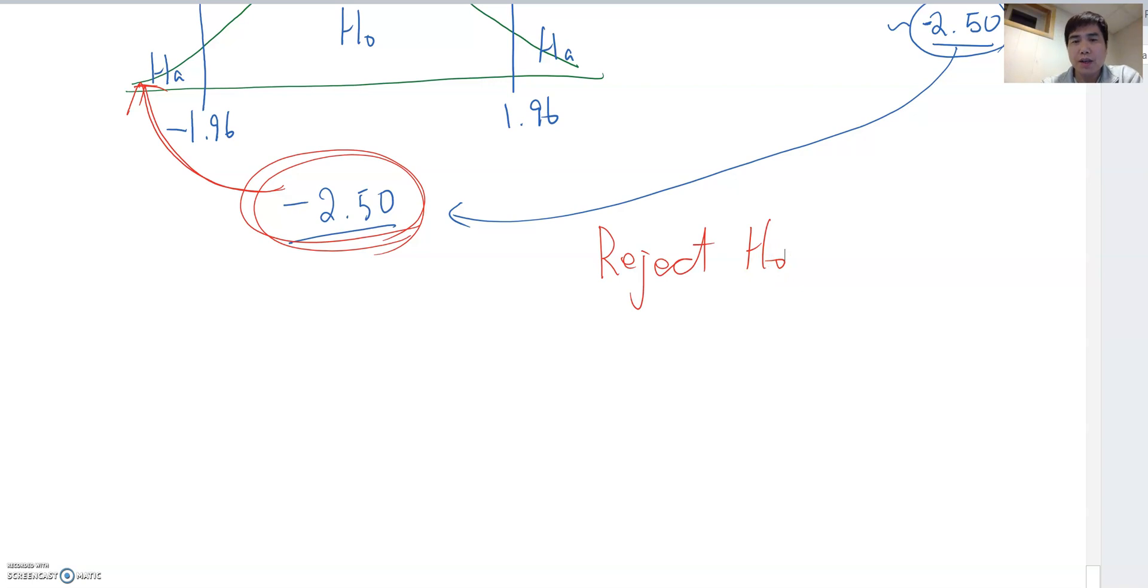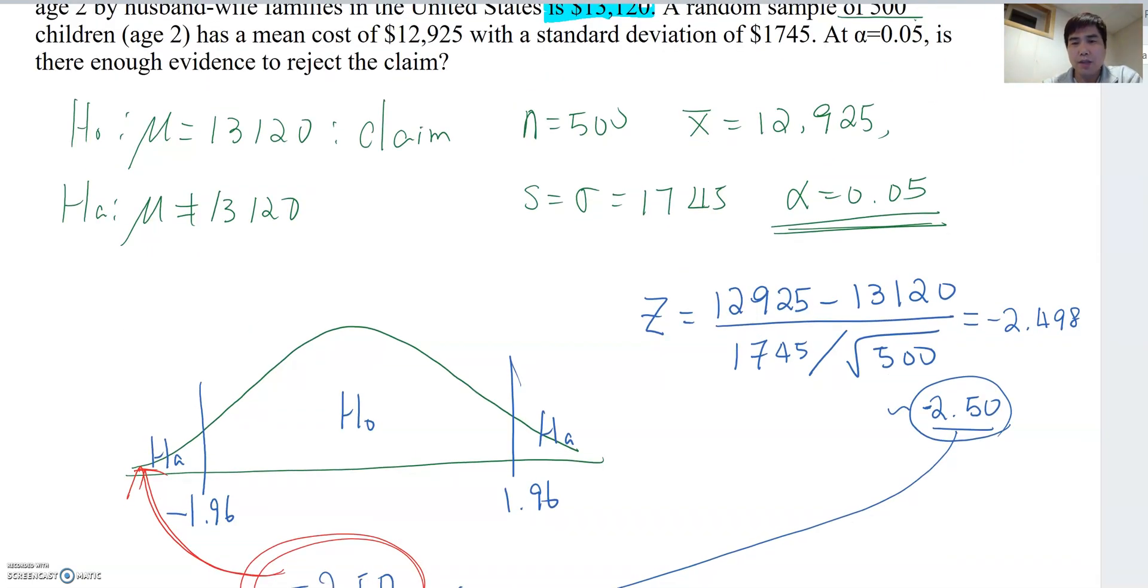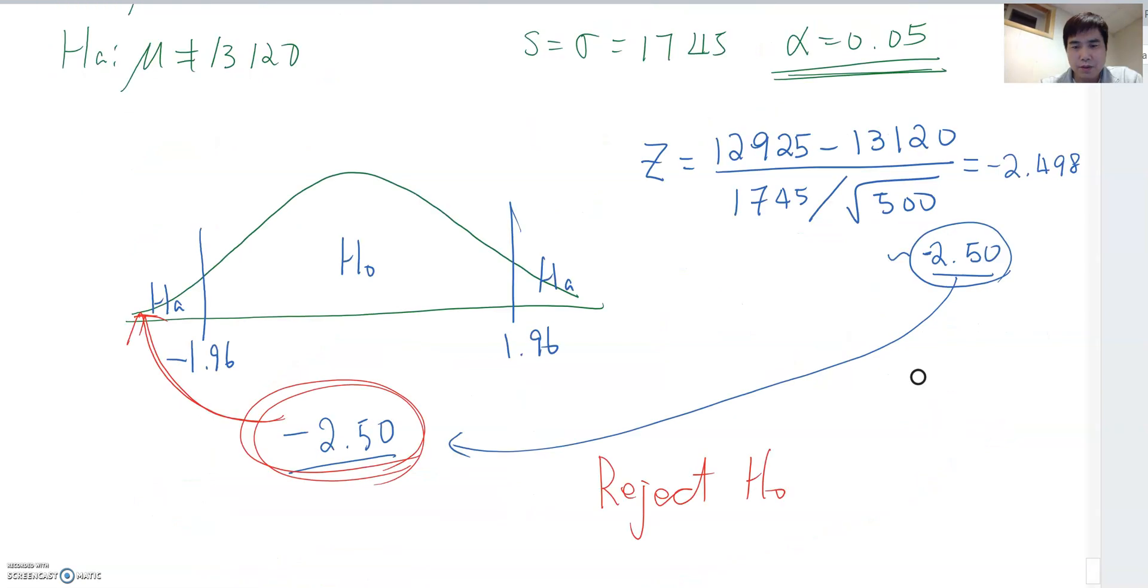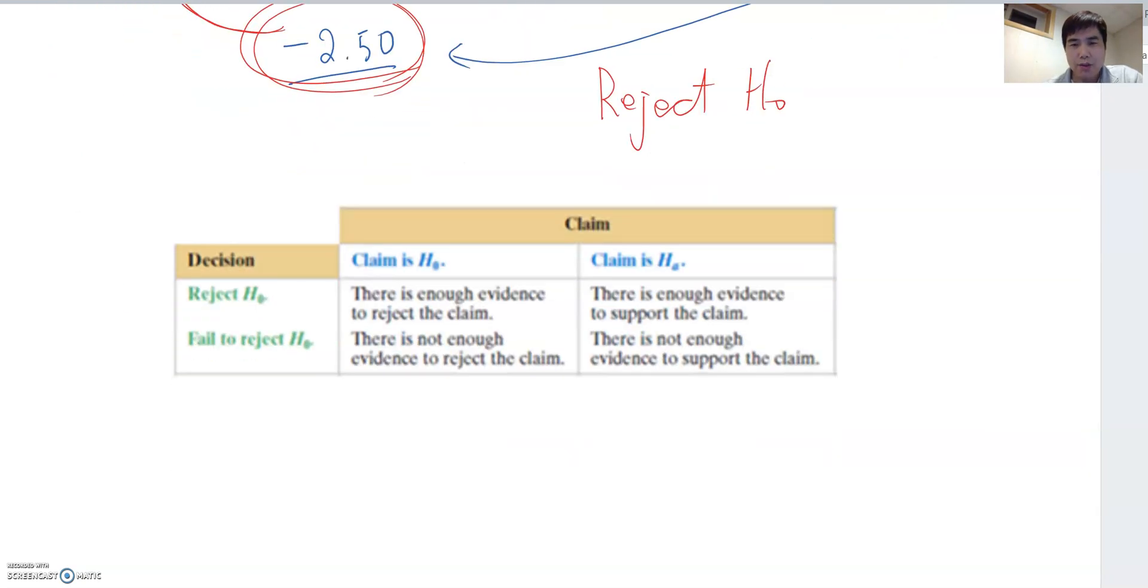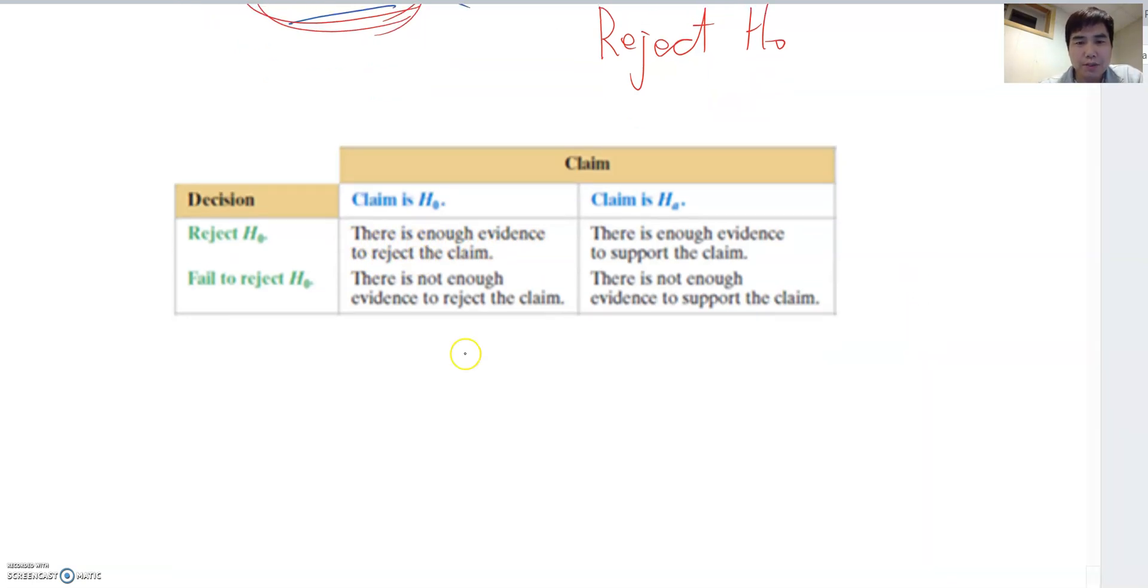Now where was the claim? Claim was on H0. Therefore, claim was H0 and then we reject H0. Therefore, we can say there is enough evidence to reject the claim. So the answer becomes: There is enough evidence to reject the claim. That will be the answer for this problem.